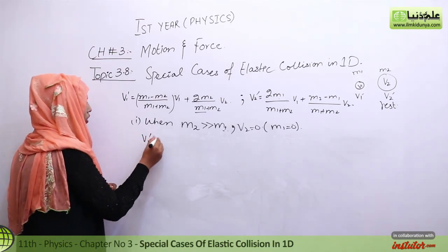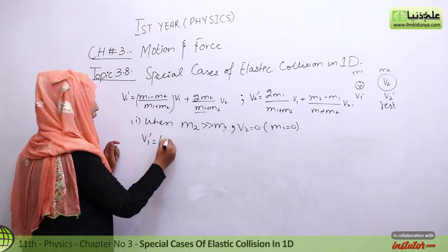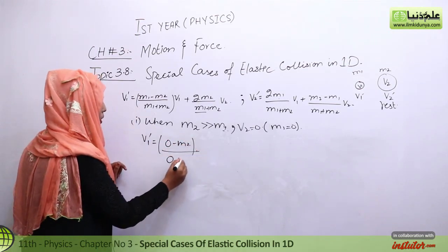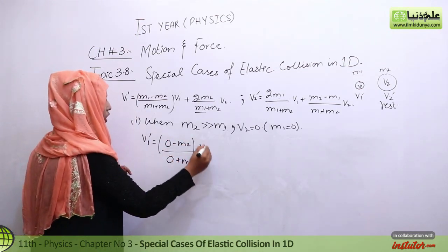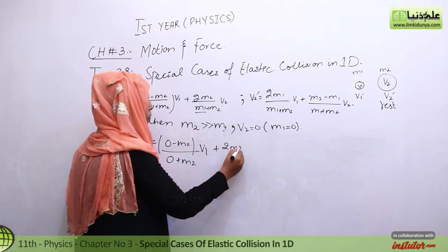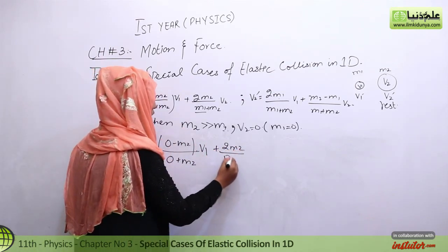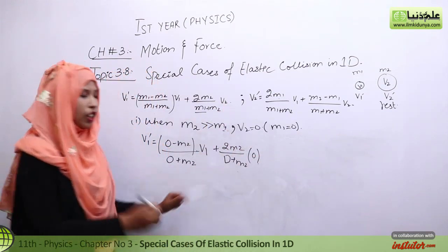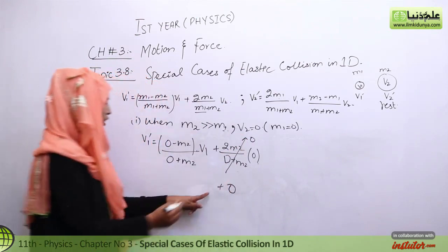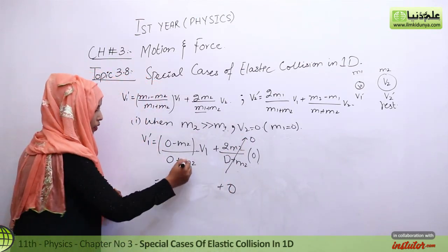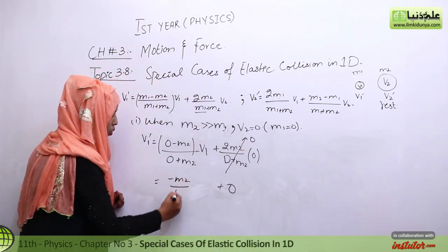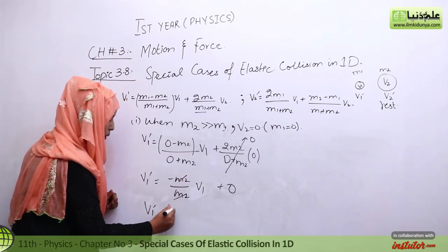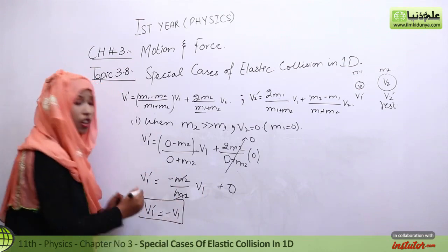Let's solve for v1'. With m1 equal to zero, the numerator of the first term becomes zero minus m2, and the denominator is zero plus m2. So we get negative m2 over m2 times v1. This cancels to give v1' equal to negative v1.